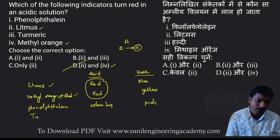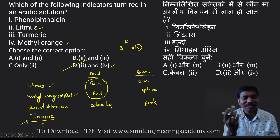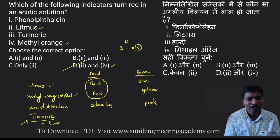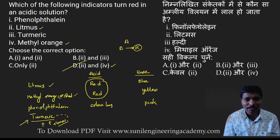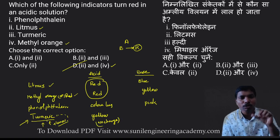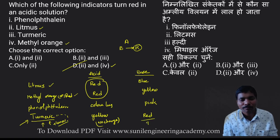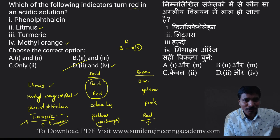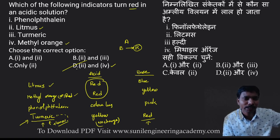What about turmeric? We eat lemon rice — so many people have lemon rice as a favorite. In lemon rice we add turmeric and lemon juice. If you add lemon juice to turmeric, does it change color? No — turmeric stays yellow, so no change in acidic conditions. But if you add chuna powder (a base) to turmeric, it turns red. So in acidic solution, litmus and methyl orange turn red — answer is option D.